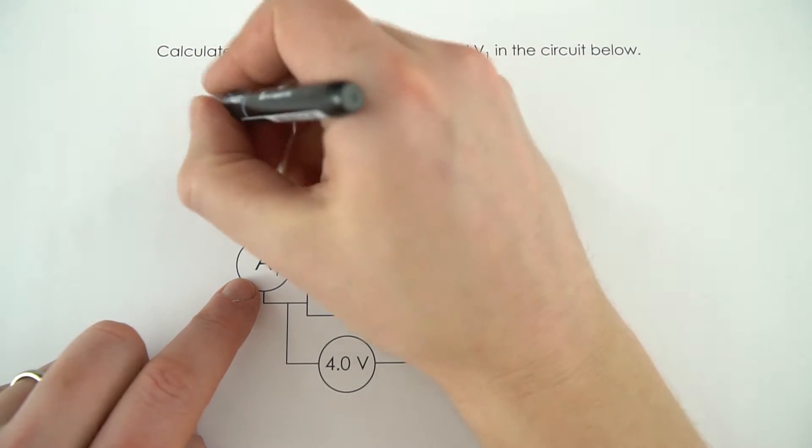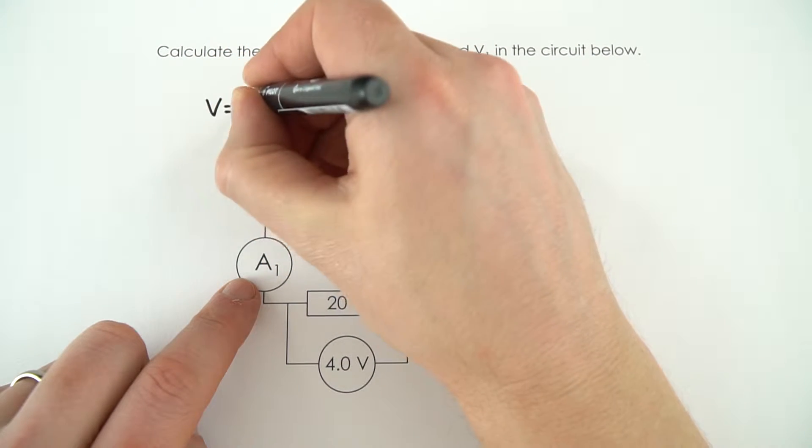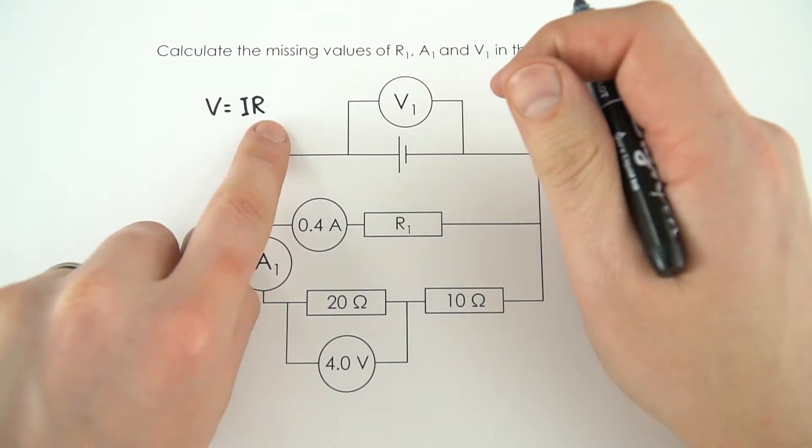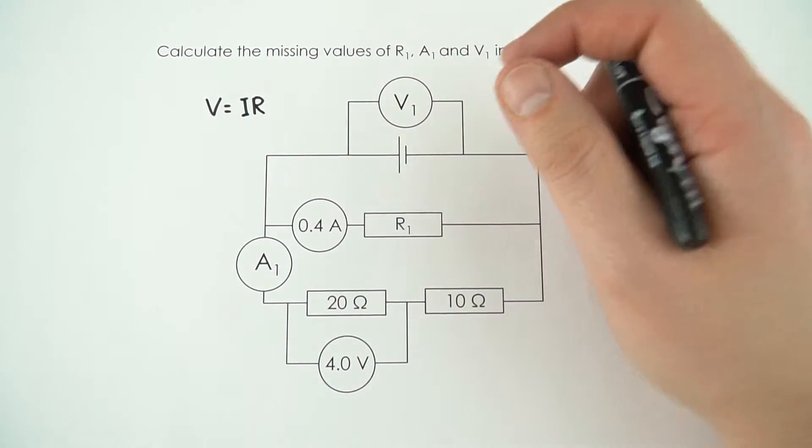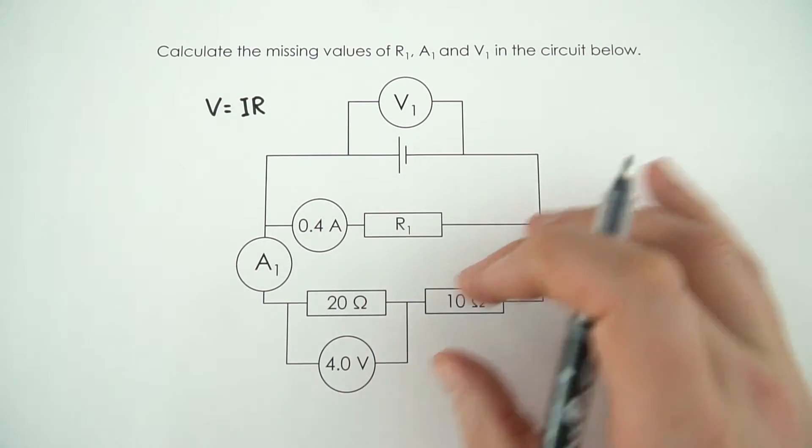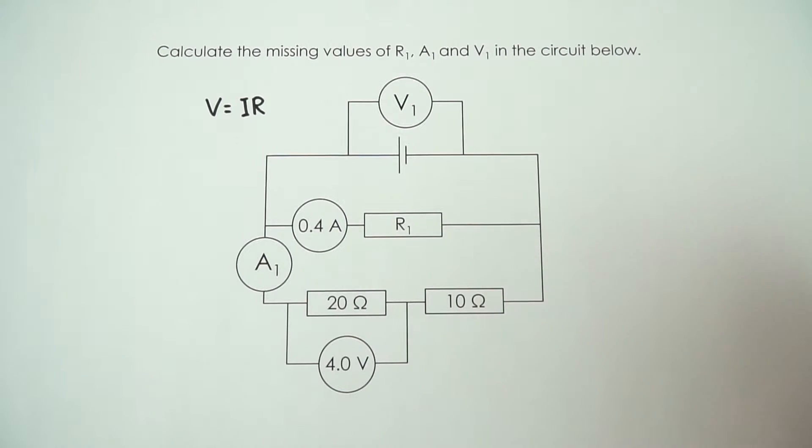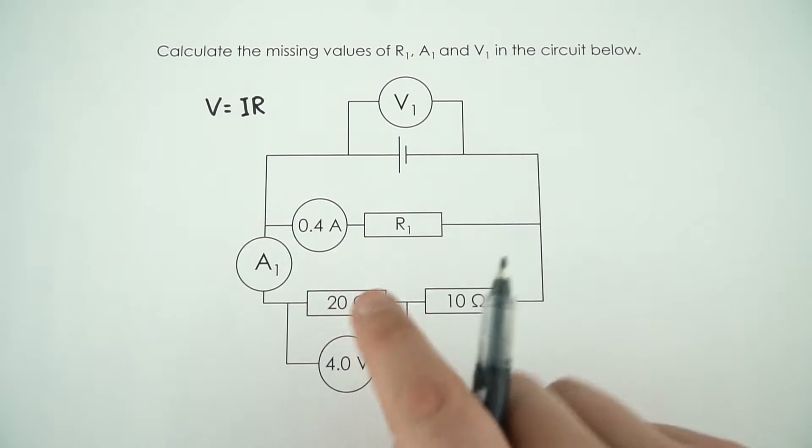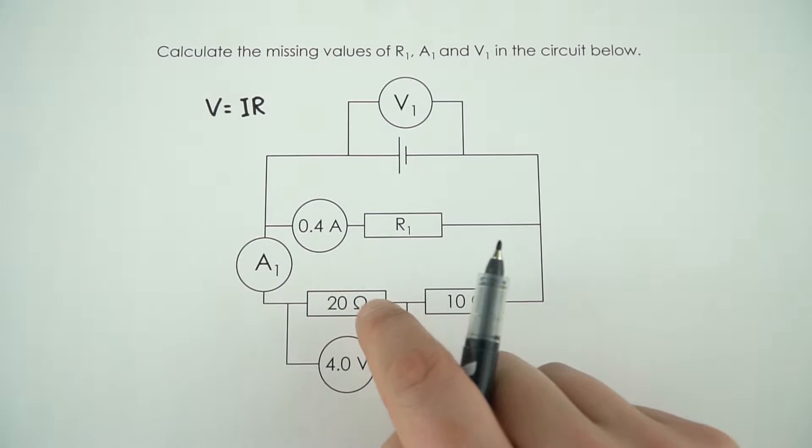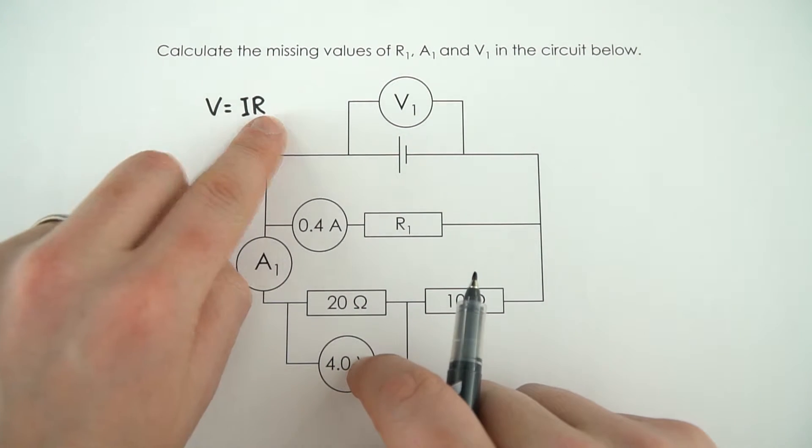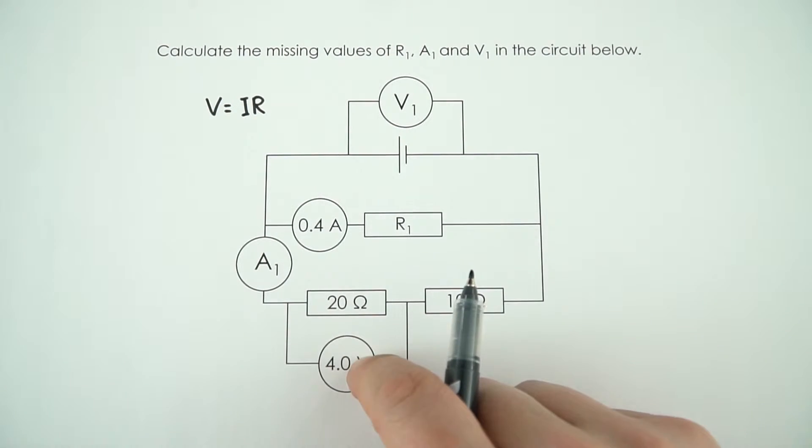Now I'm going to always refer back to the equation that says V is equal to I times R, because if you know two of these things you can work out the third. So the first thing I'm going to do is have a look on the diagram here and see where I maybe know two bits of information, and my eye is immediately drawn to this bit here, because we know through this resistor here we've got a known resistance and a known potential difference, so if we know this and this we can then work out the current through this resistor.